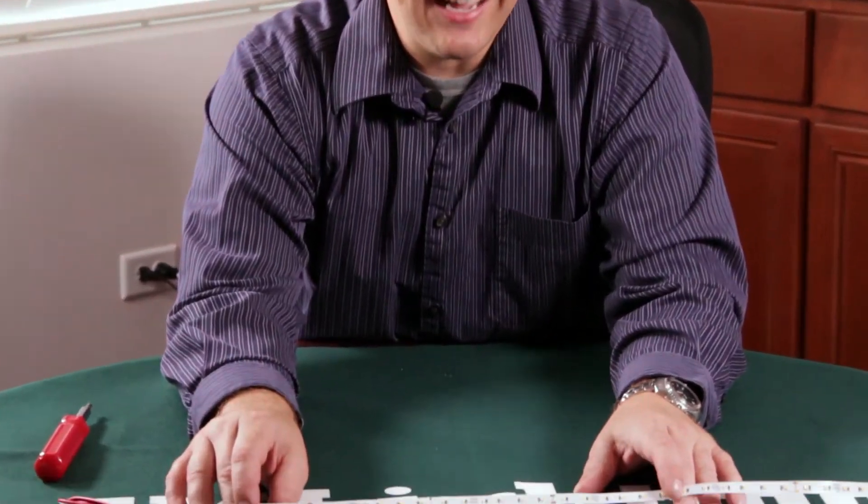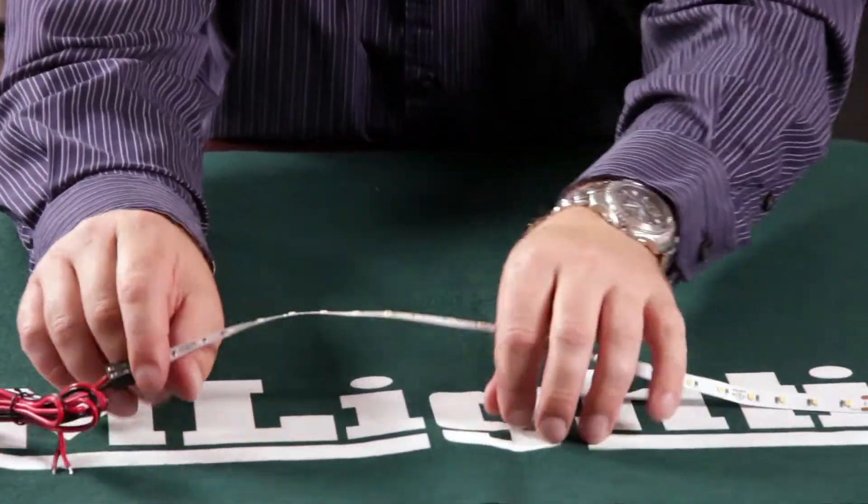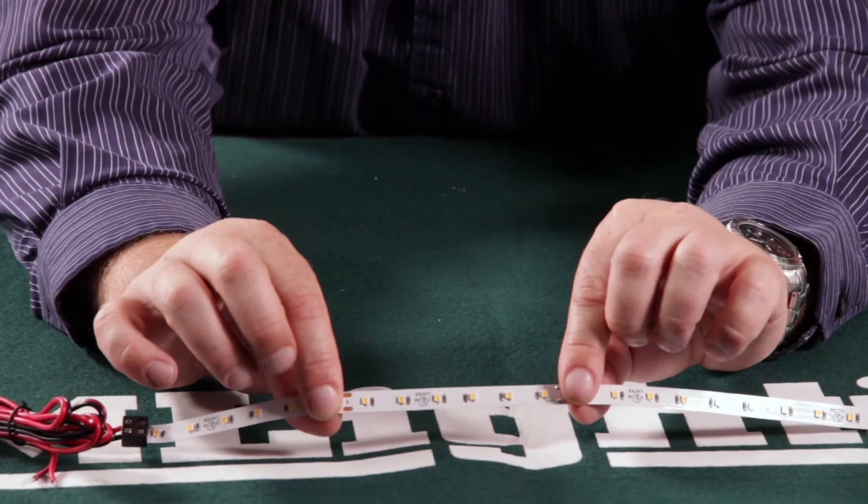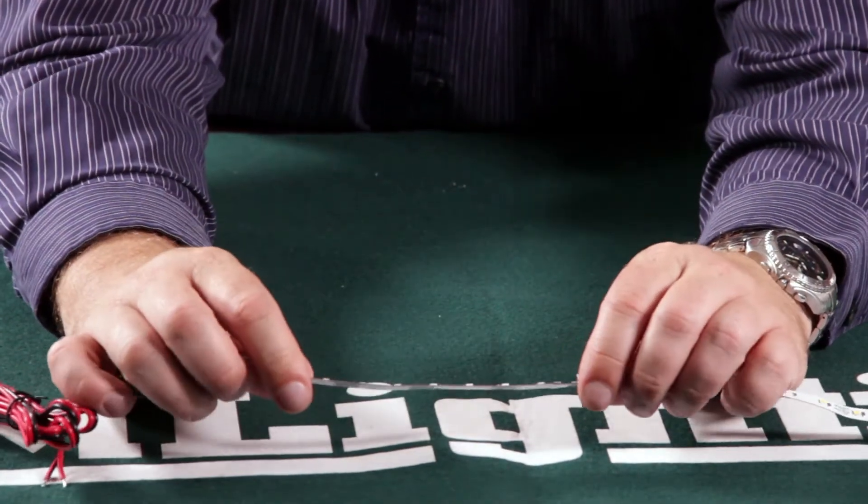Our newest line of 24-volt, high CRI ribbon, 3M-backed, of course, available in a 16-foot, 4-inch reel, cuttable every six diodes.